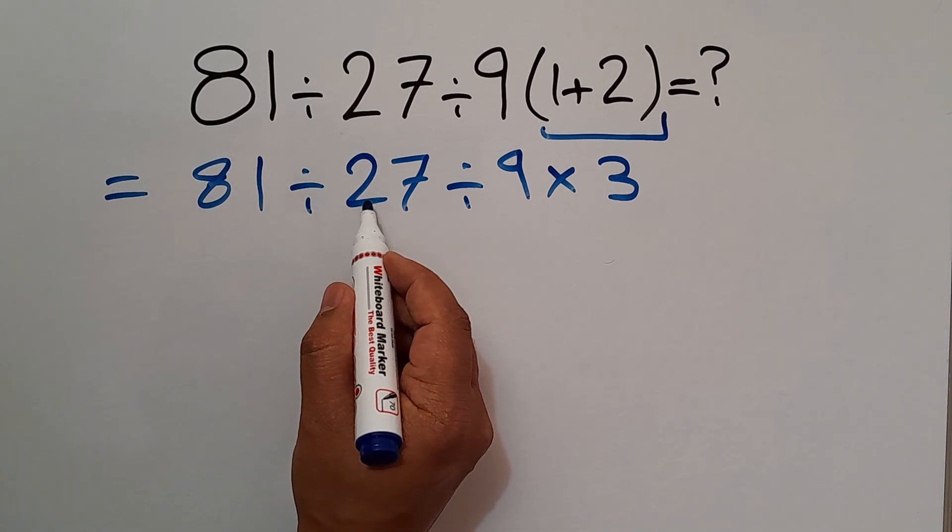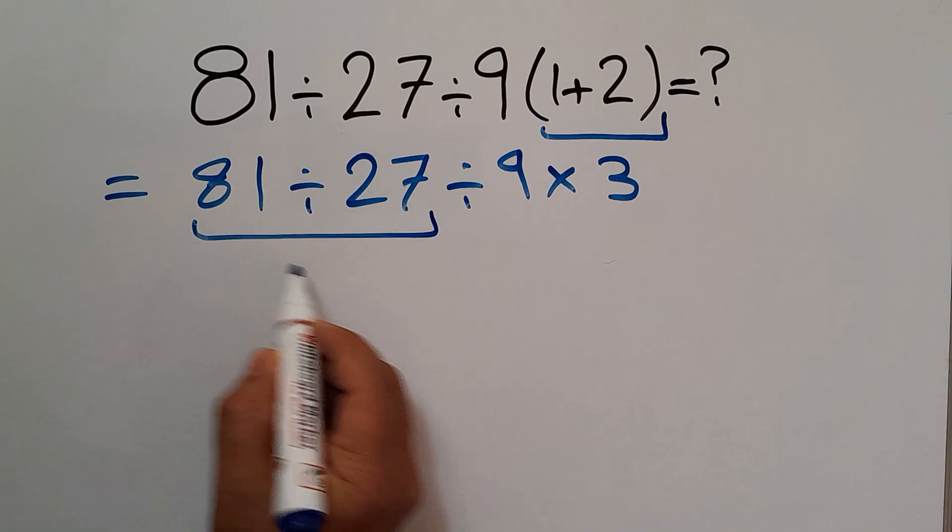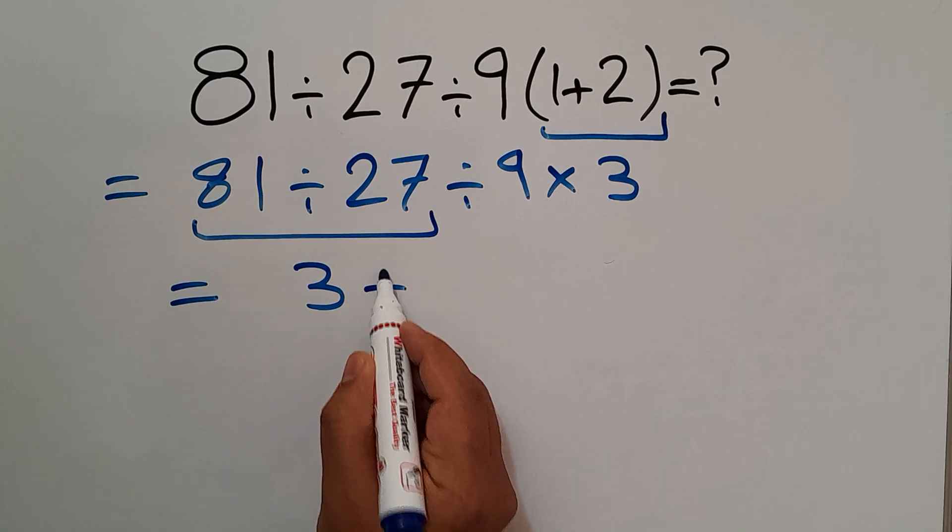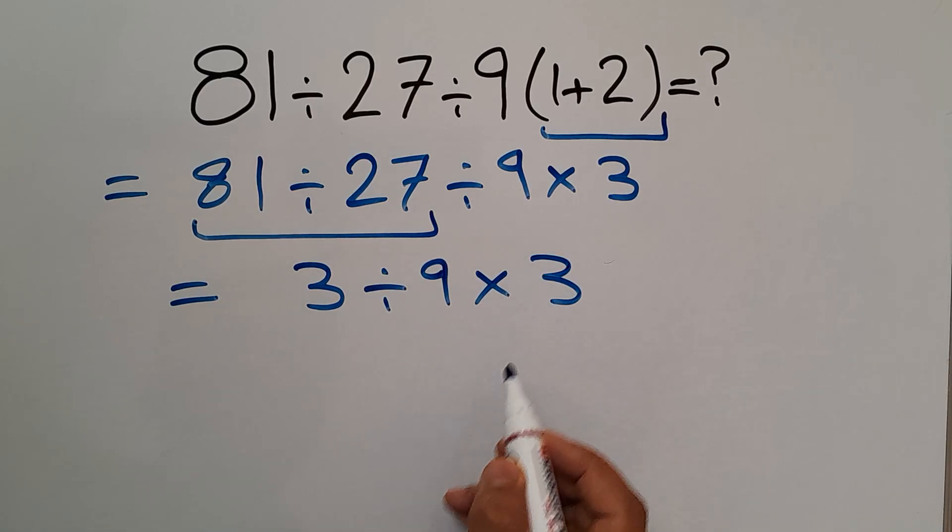81 divided by 27 gives us 3. So we have 3 divided by 9 then times 3.